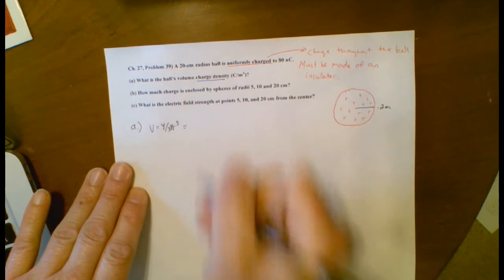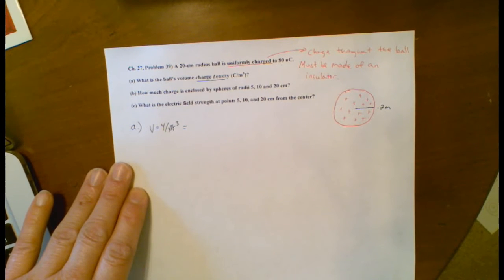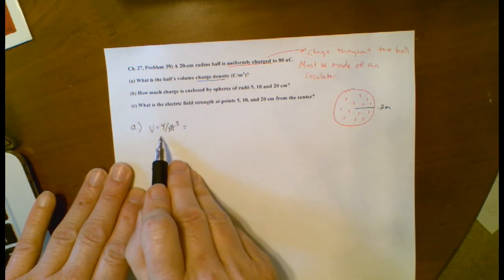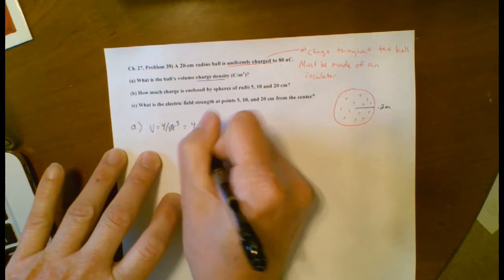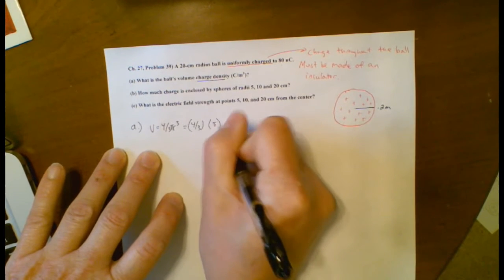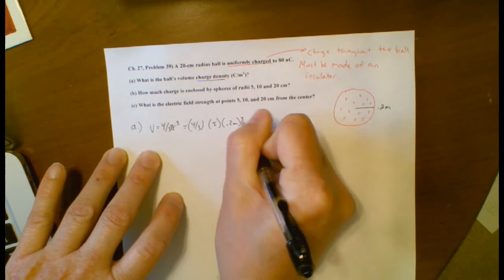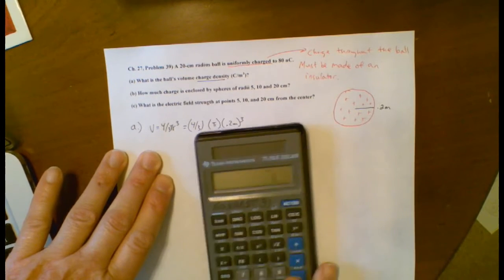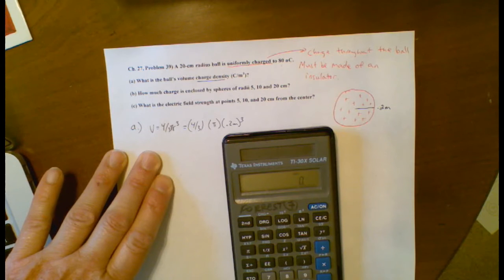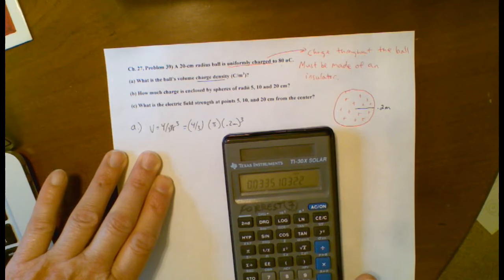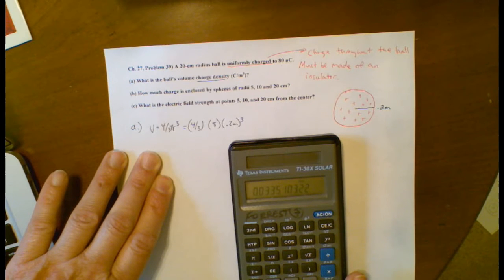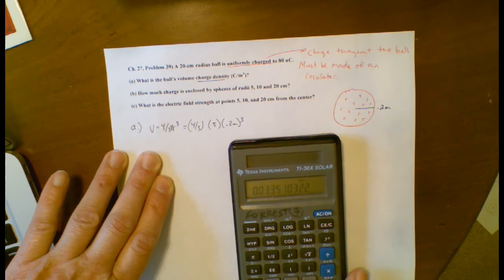So the volume of a sphere is 4-thirds pi r cubed. The surface area, by the way, is 4 pi r squared. That's the only shape which the derivative of the volume is equal to the surface area. So in this particular case, we've got 4-thirds pi radius of 0.2 meters cubed. So when I do that, 0.2 cubed times 4 divided by 3 times pi, I get a really small number like 3.35 times 10 to the negative 2 cubic meters.